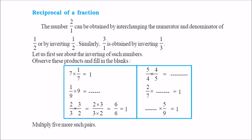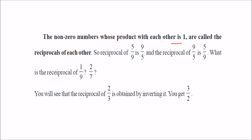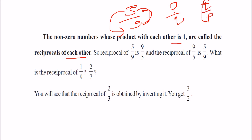So what is the reciprocal of a fraction? Whenever we are dividing two fractions, or a whole number by a fraction, or a fraction by a whole number — for example, 7 into 1 by 7 equals 1, and 1 by 9 divided by 1 by 9 equals 1 by 9 into 9 by 1. The non-zero numbers whose product with each other is 1 are called the reciprocals of each other.